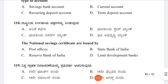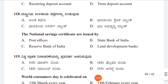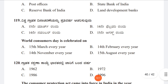Question 118: National Savings Certificates are issued by Option A: Post Offices, Option B: State Bank of India, Option C: Reserve Bank of India, Option D: Land Development Banks. The correct answer is Option A, Post Offices.